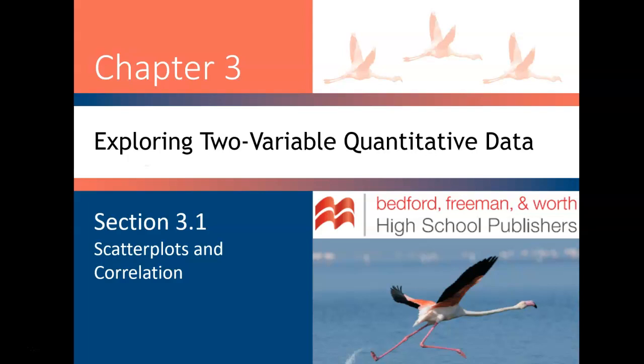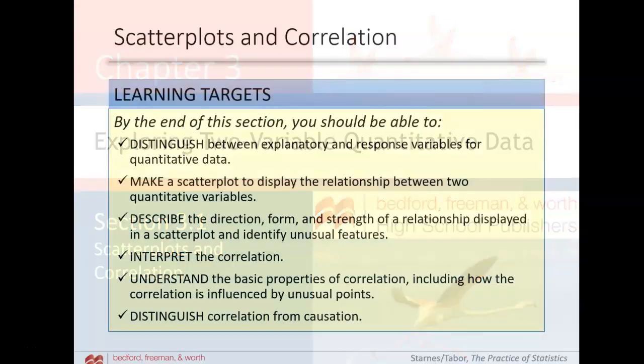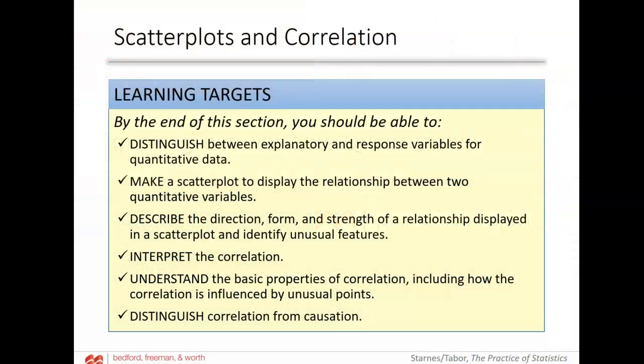For Section 3.1, we're referring to scatter plots and correlation. This is from the Starnes and Tabor 6th Edition updated edition of the Practice of Statistics.